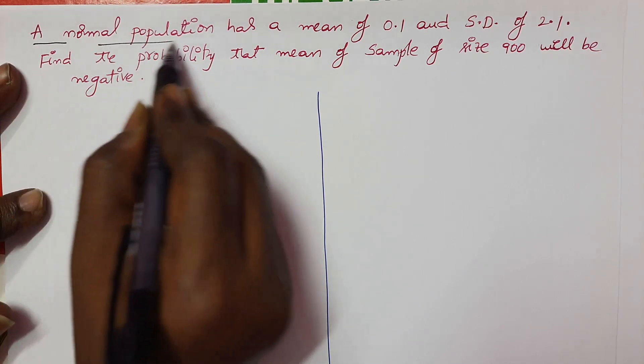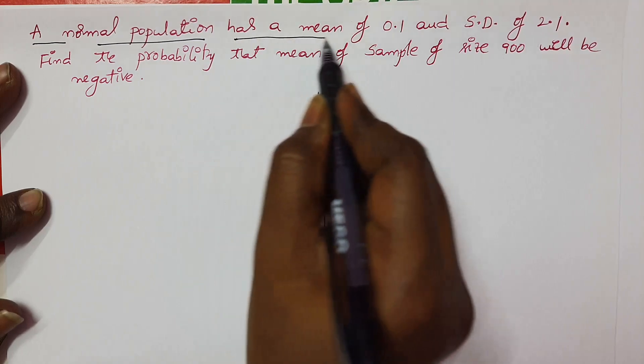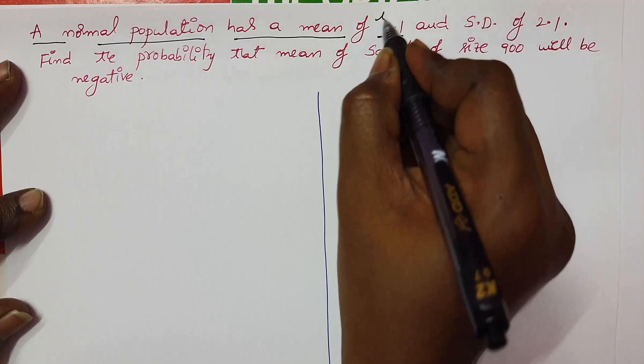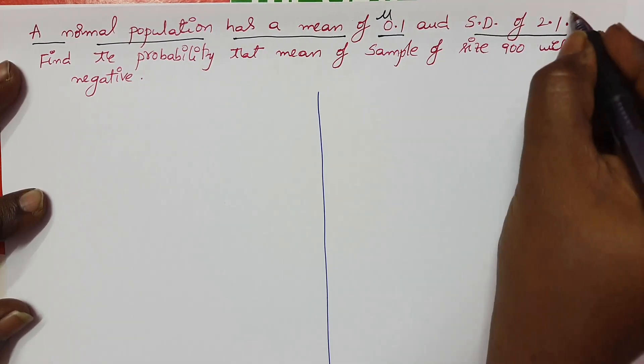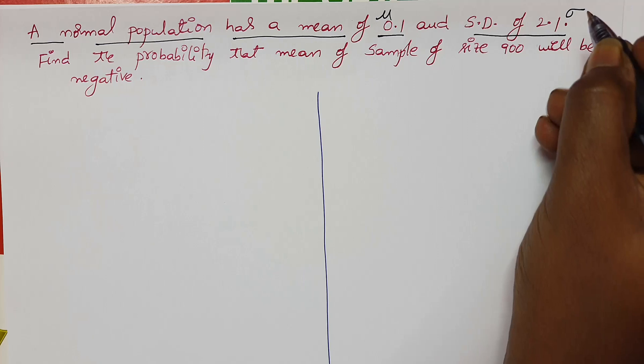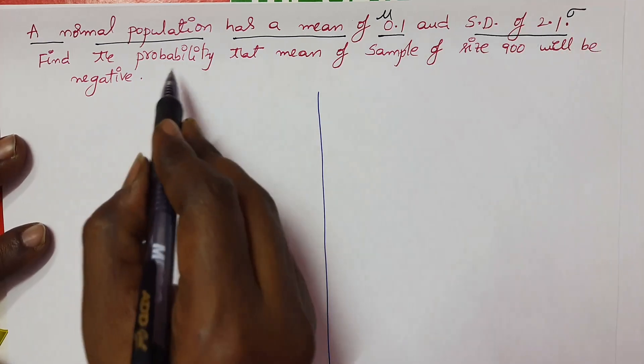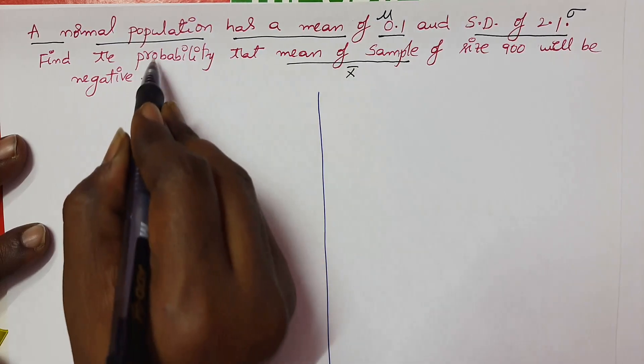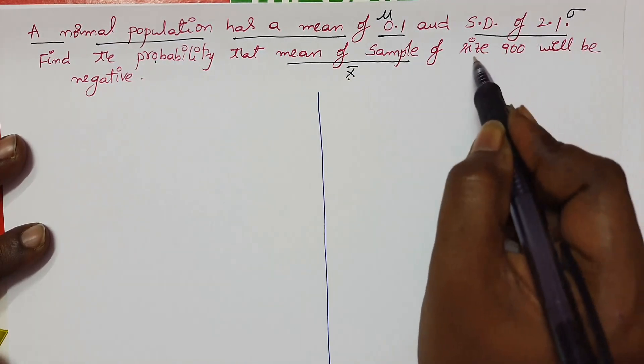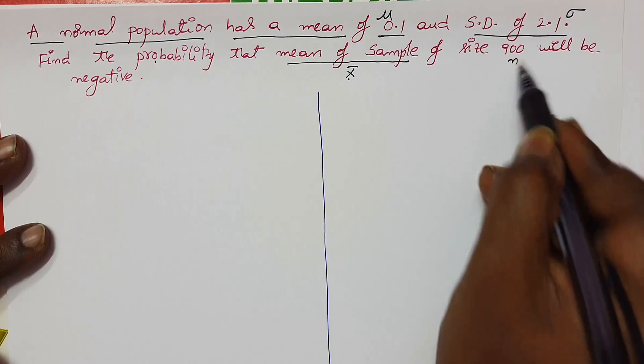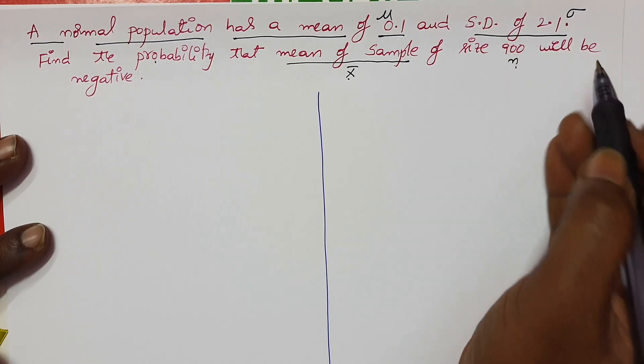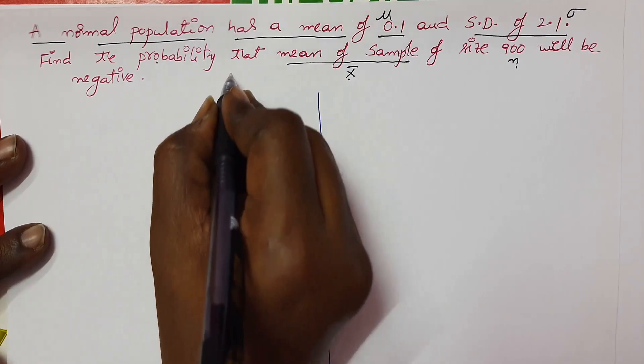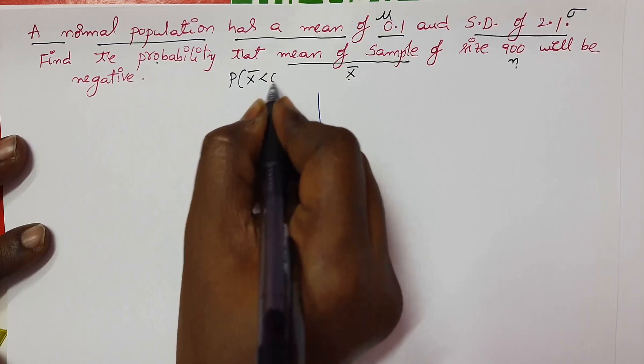See the statement: a normal population has a mean of 0.1, which is the population mean μ, and the standard deviation of 2.1, represented by σ. Find the probability that the mean of sample, represented by x̄, of size 900 will be negative. So we have to find out probability of x̄ less than 0.